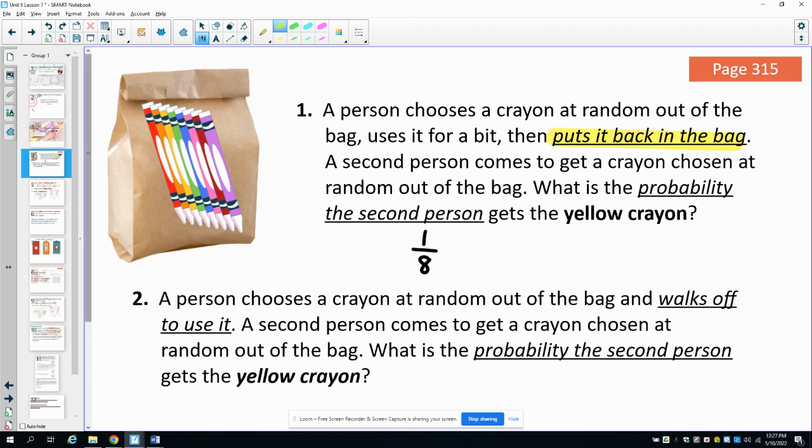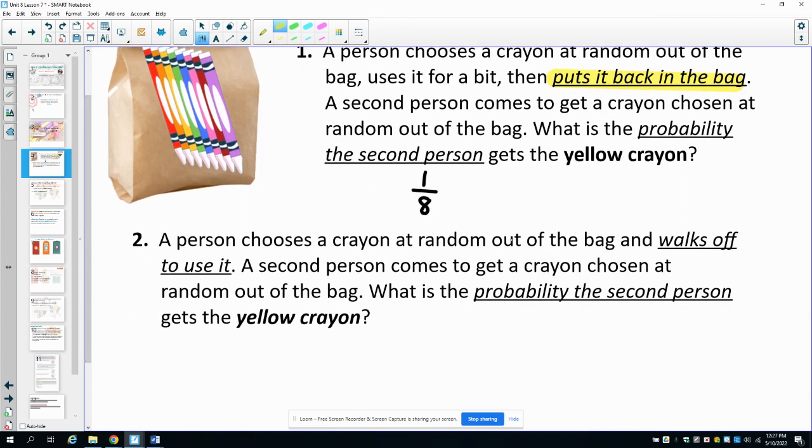In problem number two, a person chooses a crayon at random from the bag and walks off with the crayon to use it. A second person comes to get a crayon and chooses a crayon at random. What is the probability that the second person gets the yellow crayon now? So remember that the one crayon has been selected and it has not been returned. So there are only seven crayons in the bag now.